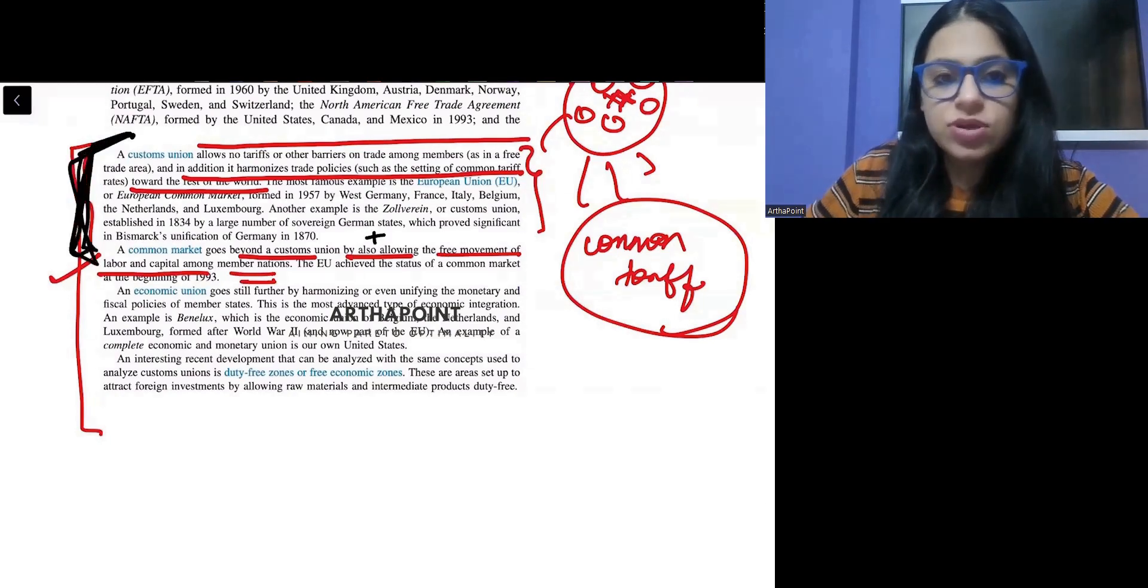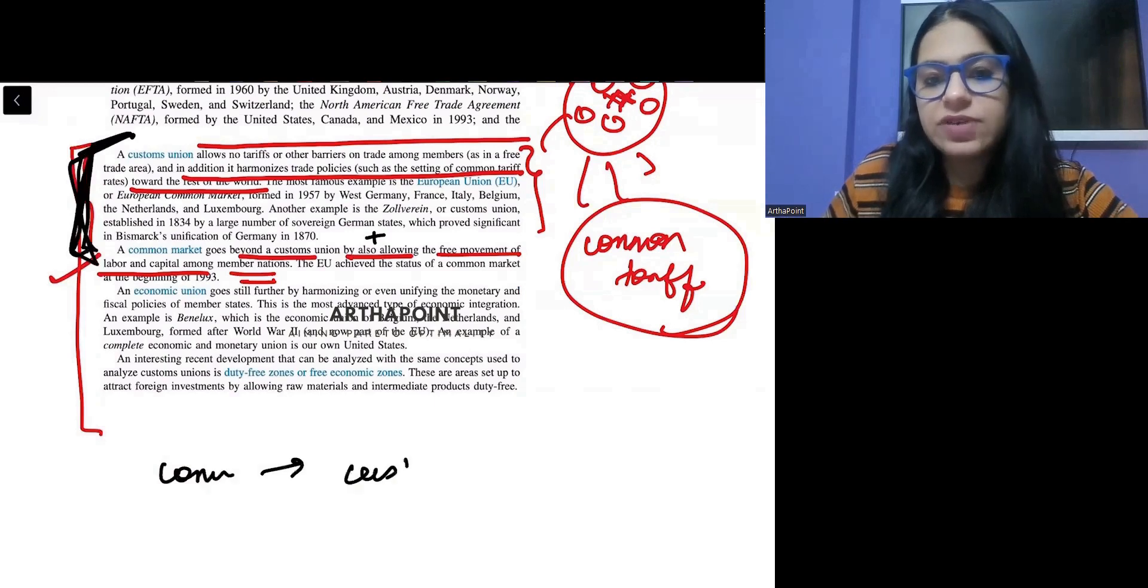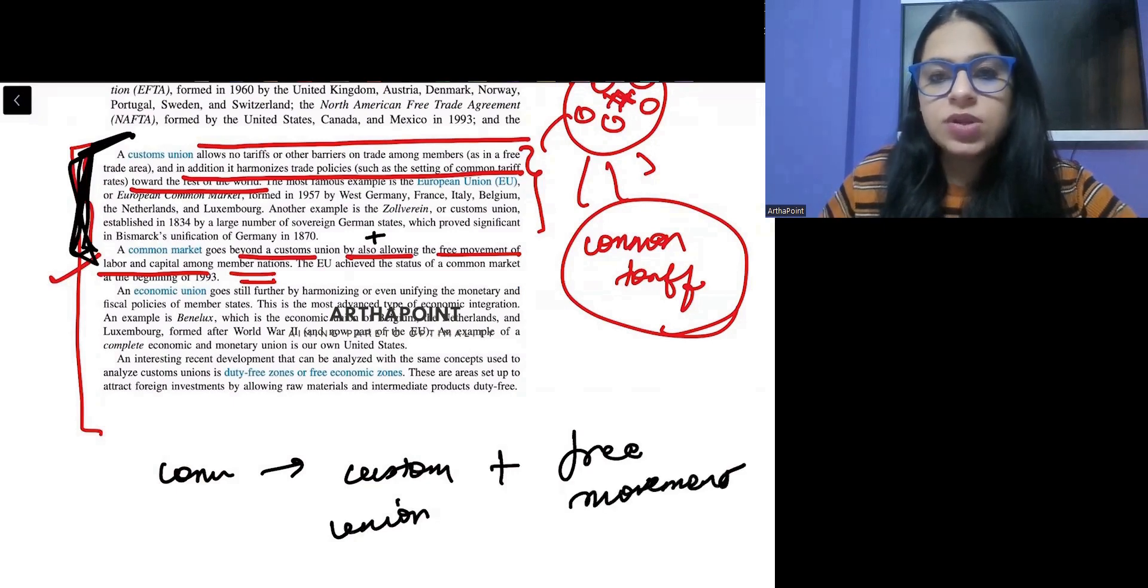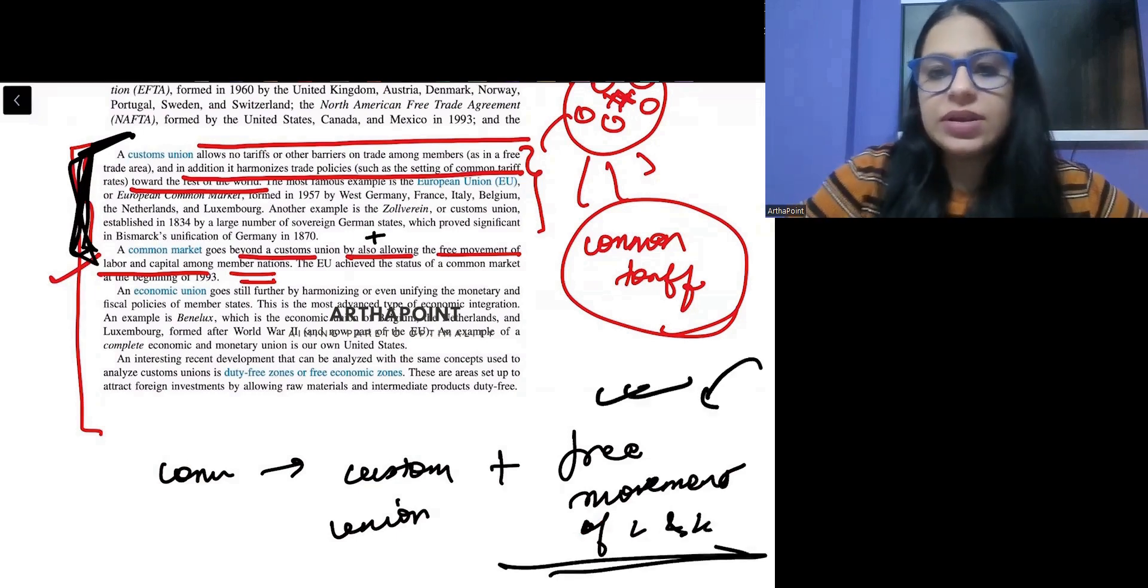Jo bhi custom union kar raha hai, common market is basically whatever custom union does, right? Plus it is also going ahead and doing free movement of labor and capital. It is also allowing free movement of labor and capital, right? So that is it. That's the answer.